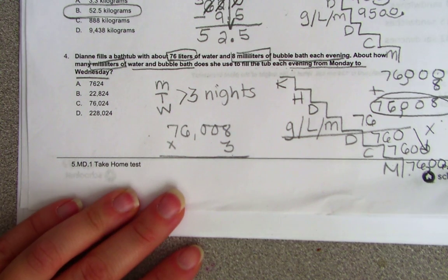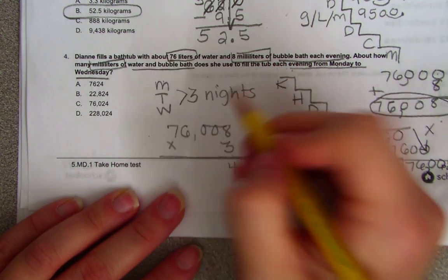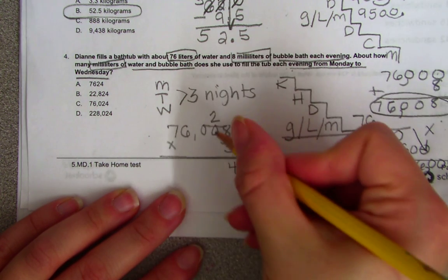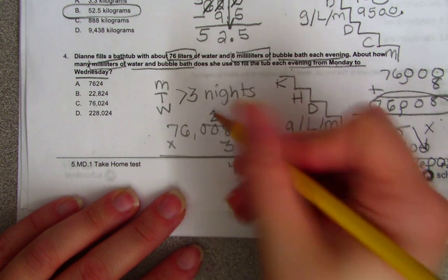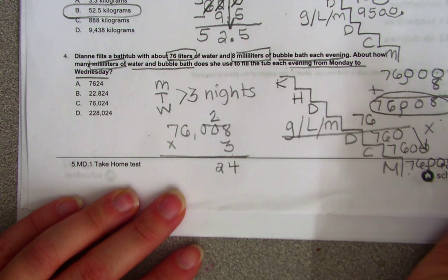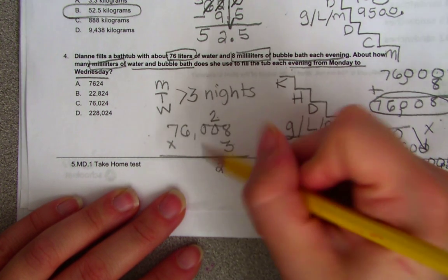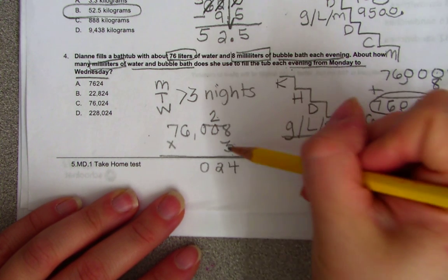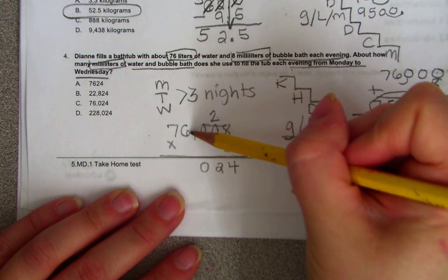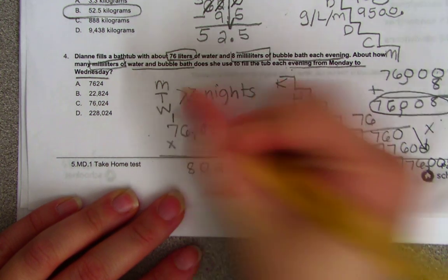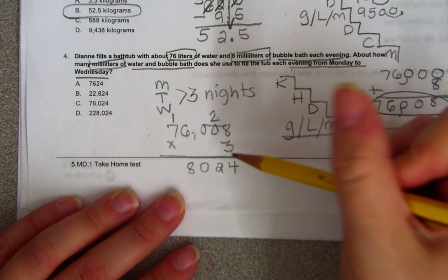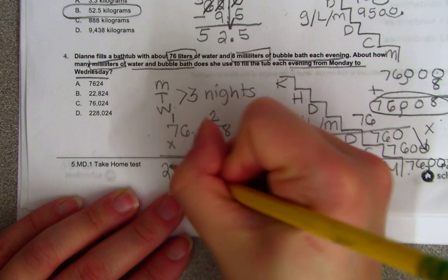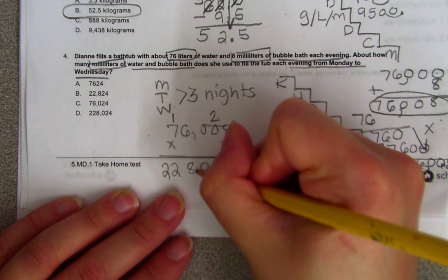3 times 8 is 24. Put your 4 here and your 2 up top. 3 times 0 is 0 plus 2 is 2. 3 times 0 is 0. 3 times 6 is 18. Trade your 1. 3 times 7 is 21 plus 1, 22. And there are no decimals, just commas.